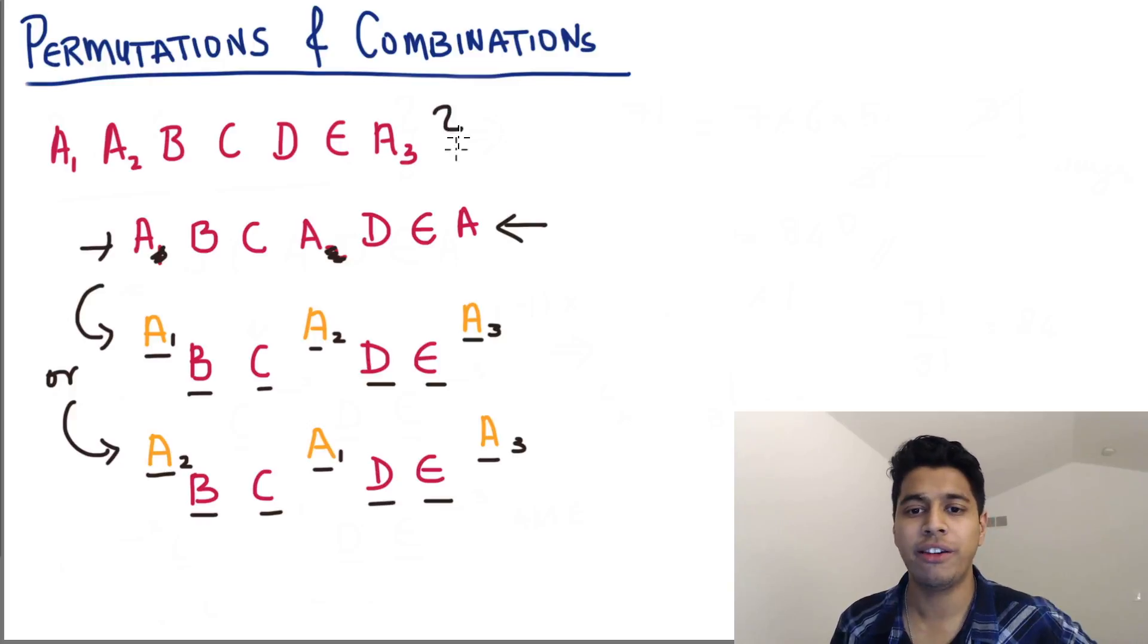So now what you can do is you can treat these as unique letters, and then just divide by the number of times these duplicate arrangements can occur. So here you have one, two, three, four, five, six, seven. Seven unique letters. Now, remember, you really don't have seven unique letters. You have five unique letters - A, B, C, D, E. But just to calculate this, think of it in this way. Suppose you had seven unique letters, what would the number of arrangements be? Seven factorial. So let's write seven factorial.